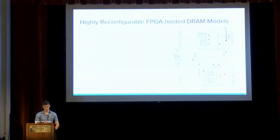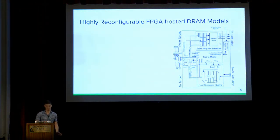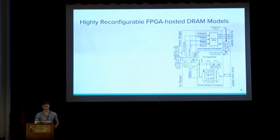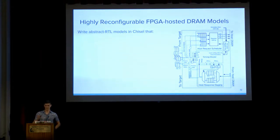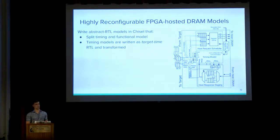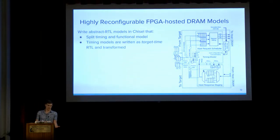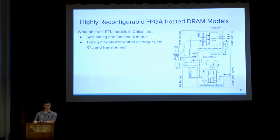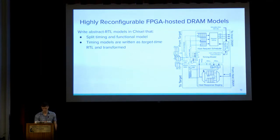We provide a set of very detailed, highly reconfigurable DRAM models in MIDAS. The idea is to solve the DRAM modeling problem by writing abstract models in Chisel that split timing from functional models — as was done in RAMP — but expressing the timing model as target-time RTL. When writing a detailed timing model of a DRAM subsystem, what you end up writing looks a lot like a DDR controller, because you need to track all bank states and rank states and write a memory access scheduler. Instead of worrying about host time and token management, you write it as though you're writing a DDR controller, then transform it using the same FIRRTL transformations applied to the target RTL.